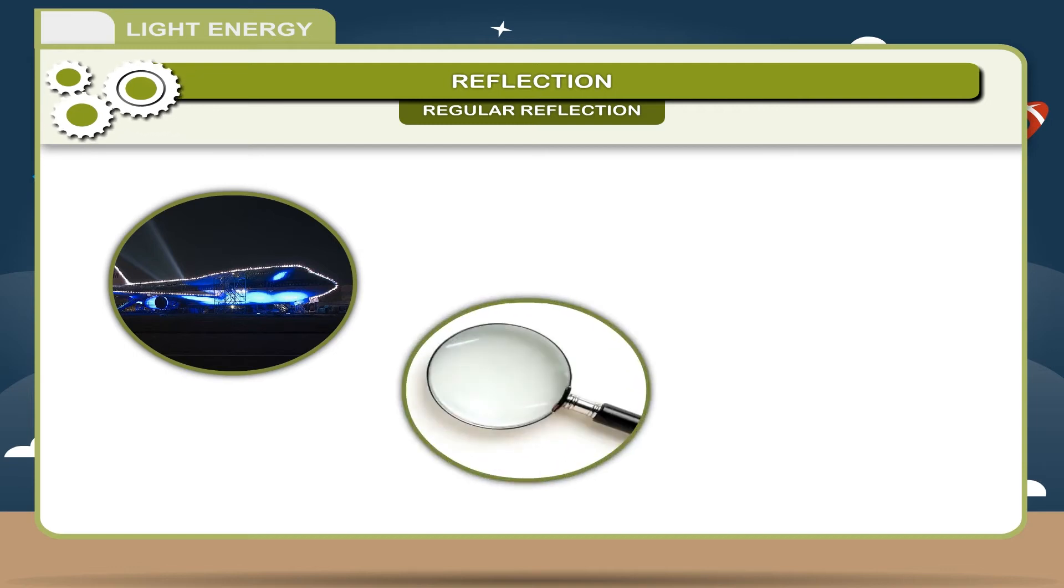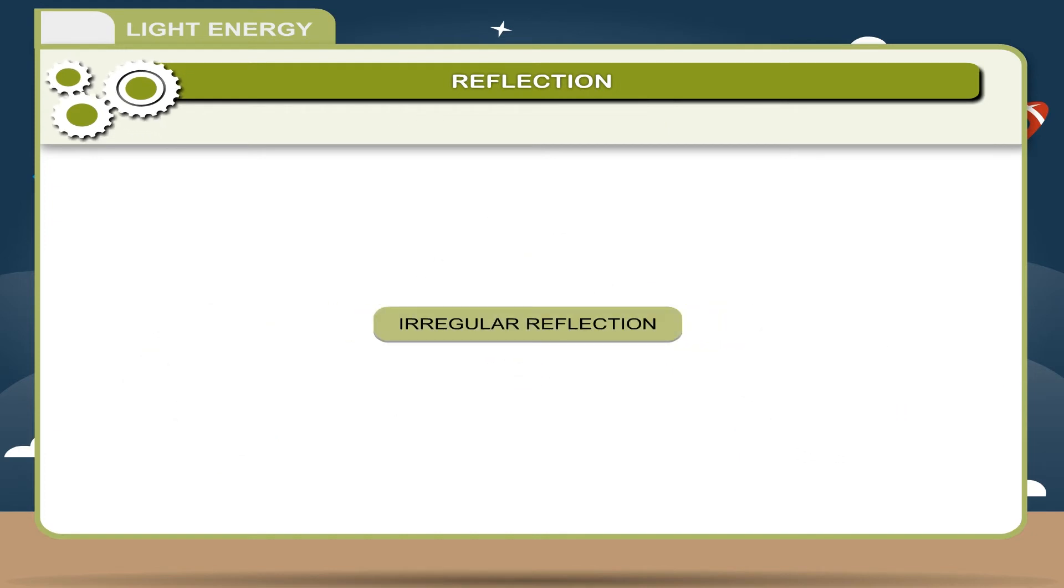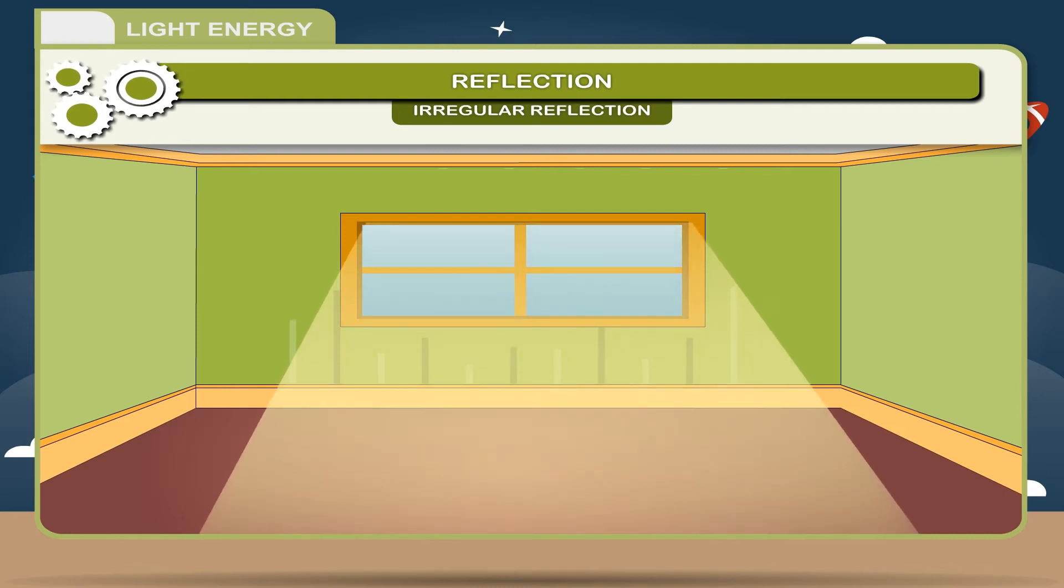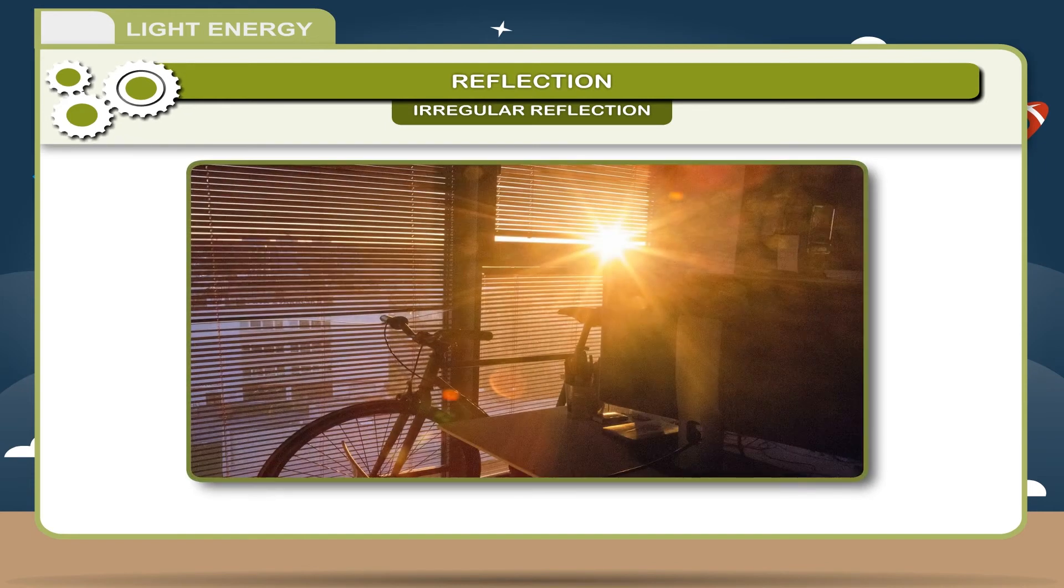Irregular reflection. When a parallel beam of light strikes a rough surface, the reflected rays scatter in different directions. Such a reflection is called irregular reflection. During the irregular reflection, the laws of reflection still exist, but light diverts in different directions after reflection. Example: reflection of light from the wall of a room, paper, etc.